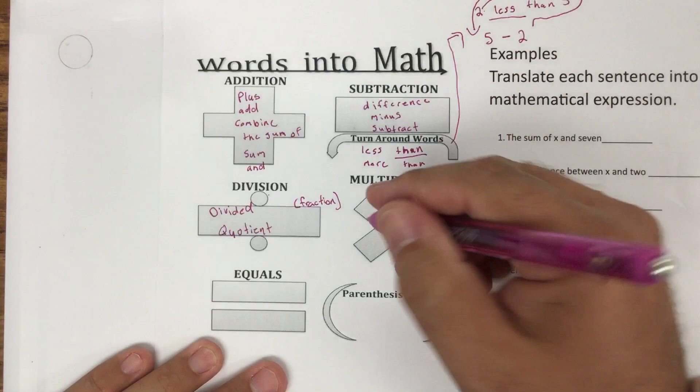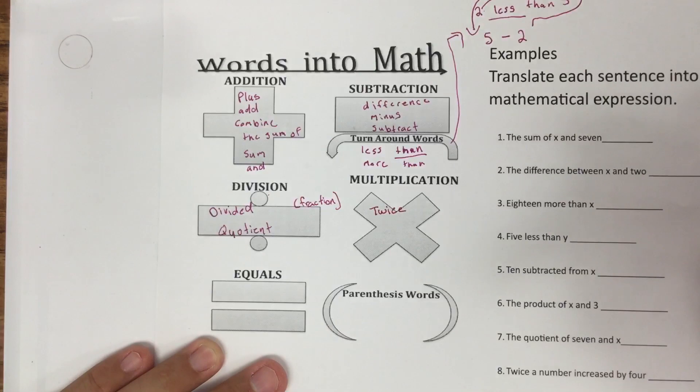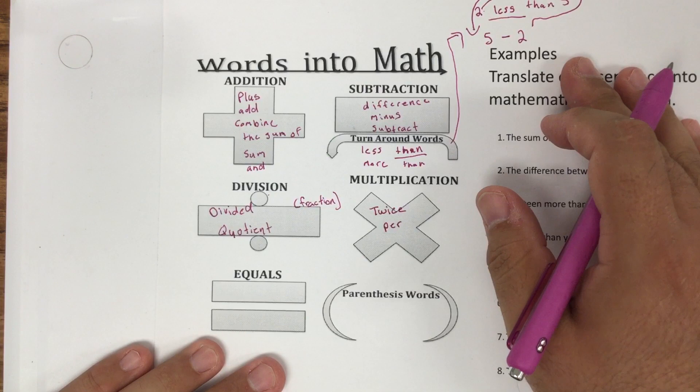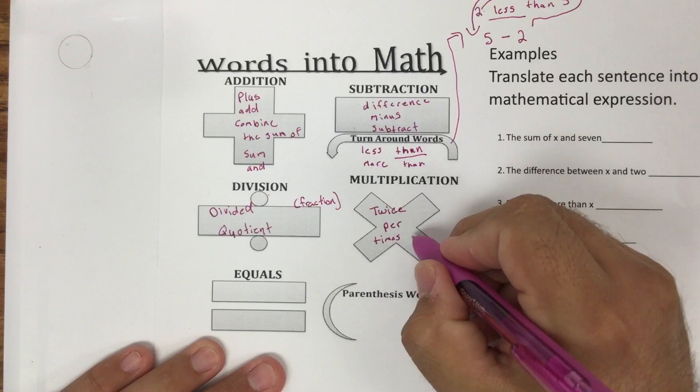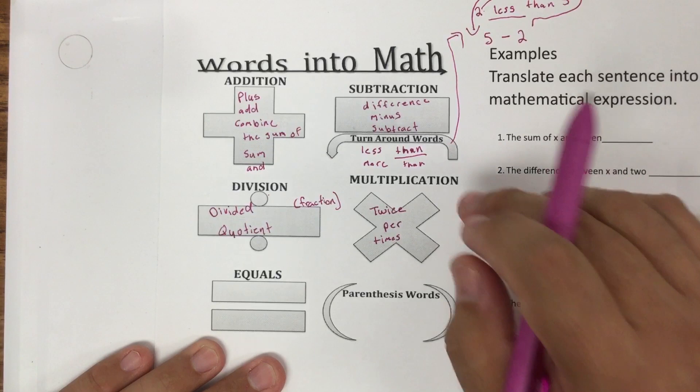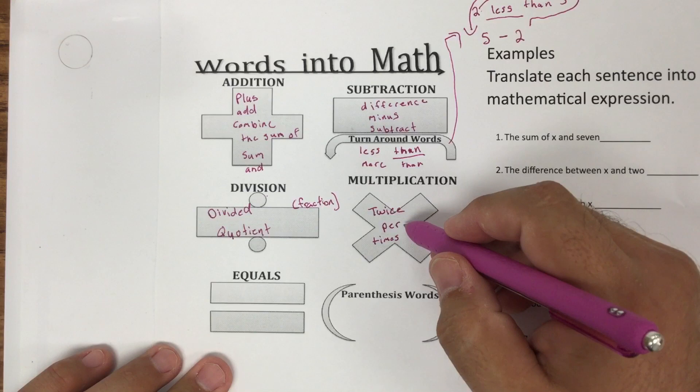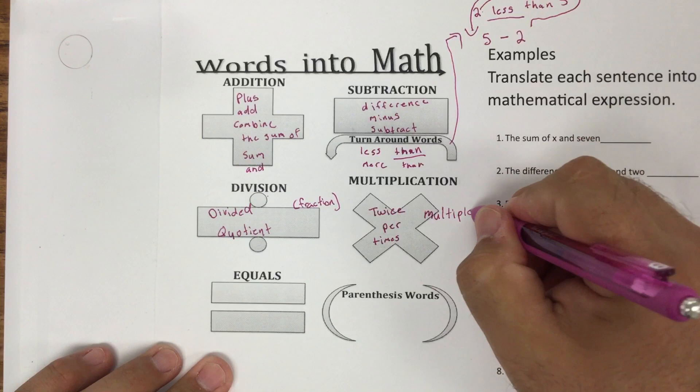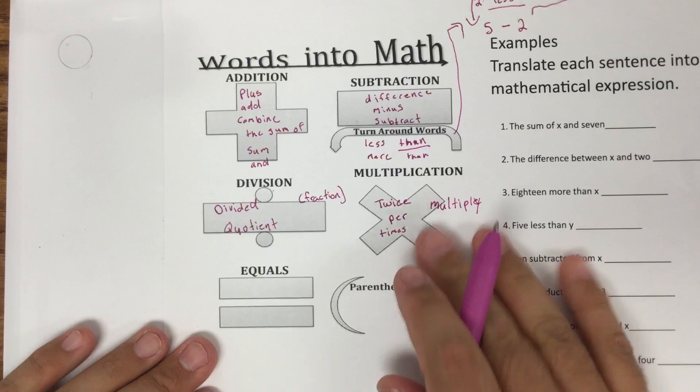We're going to go ahead and go with multiplication. Some words: twice. That's like saying two times. Twice is two times. Per - so 35 miles per hour, you're going to multiply the 35 times hours. Times, so like times the difference. A lot of words on here are going to be the same thing for multiplication: twice, twice means two times, per, times. Multiply, that's another keyword that you probably want to use in here. Multiply, multiple, all that good stuff.